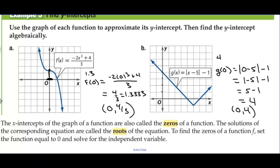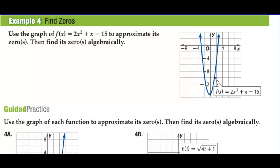The x-intercepts of the graph of a function are also called the zeros of a function. The solutions of the corresponding equation are called the roots of the equation. To find the zeros of a function f, set the function equal to 0 and solve for the independent variable. For y-intercepts, we plug 0 in for x; for x-intercepts, we plug 0 in for f of x.